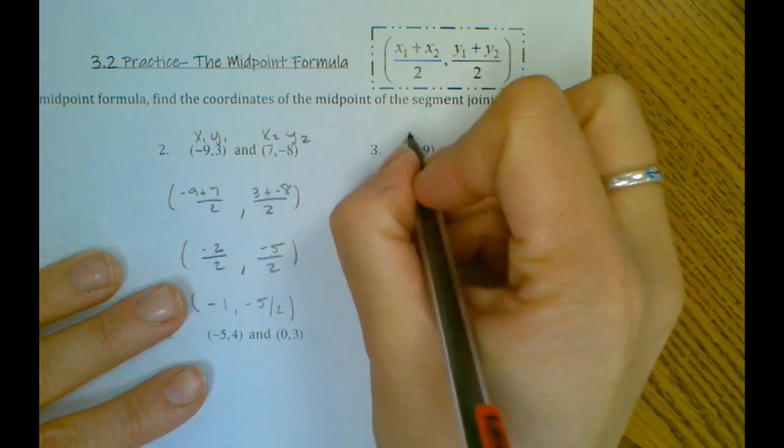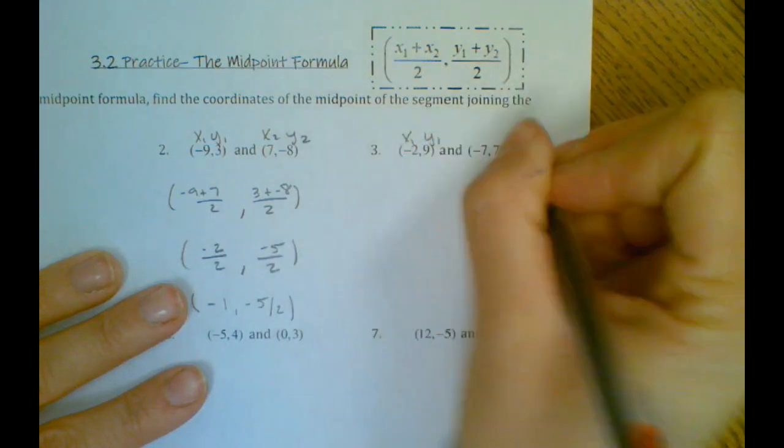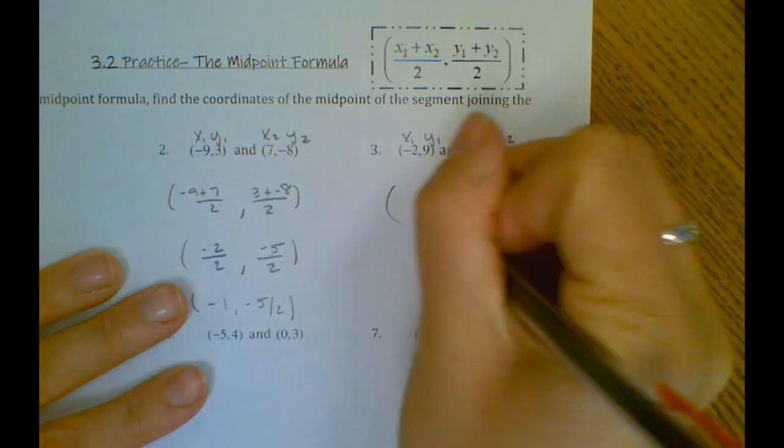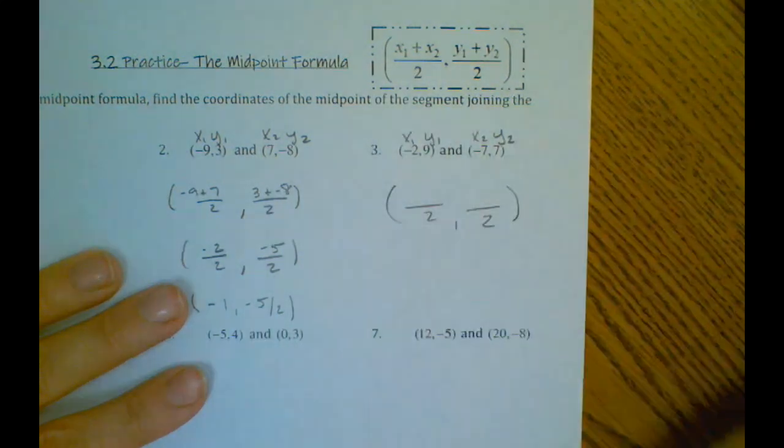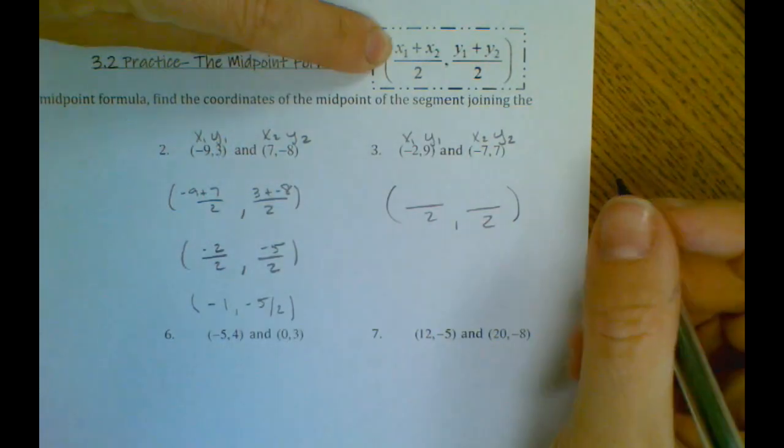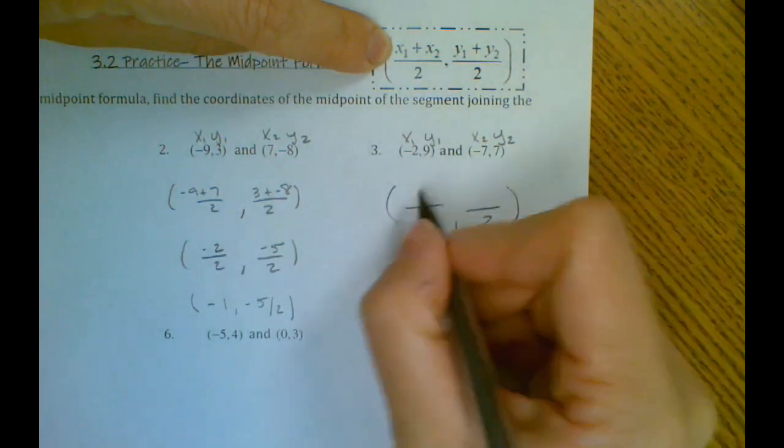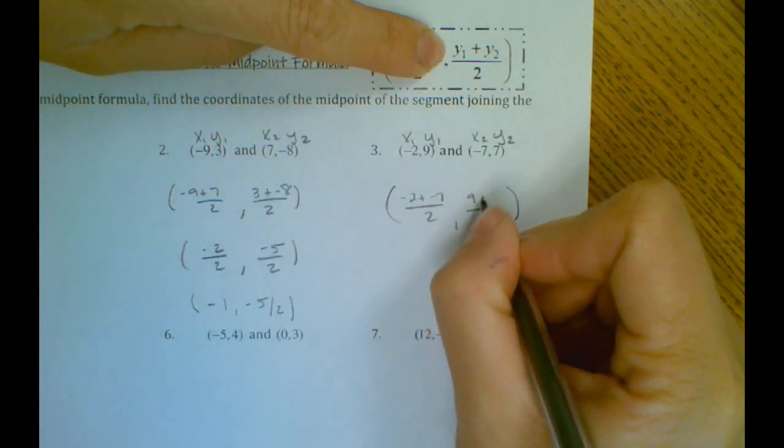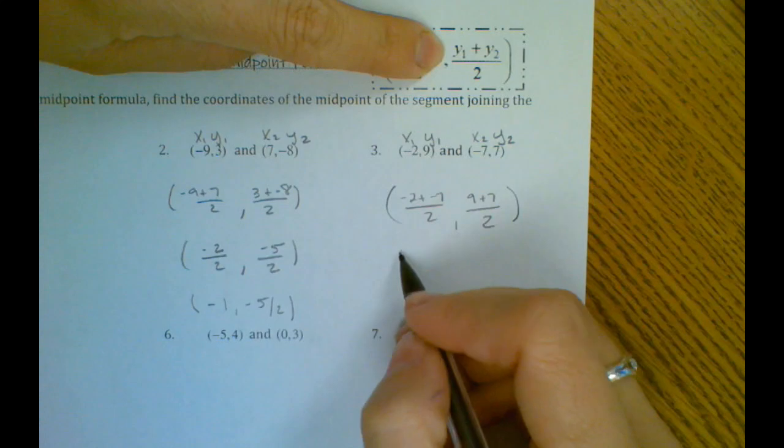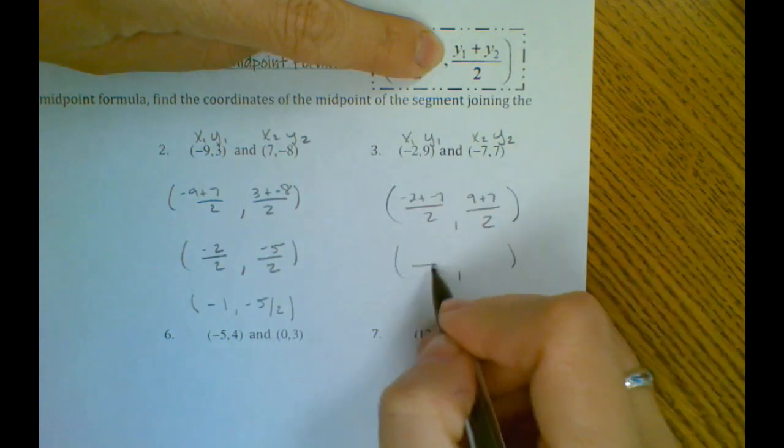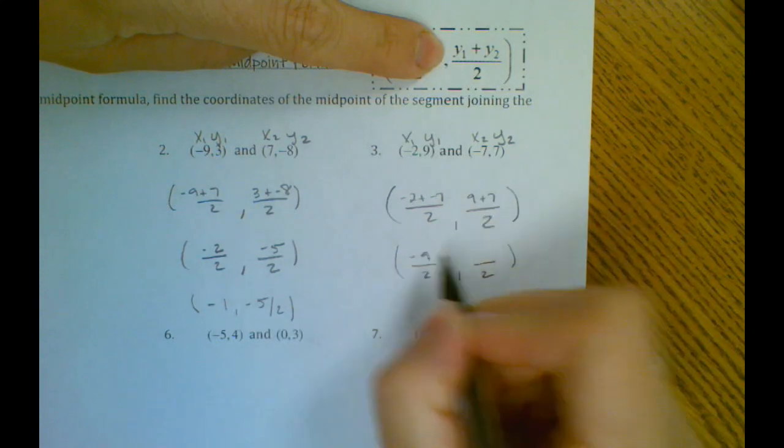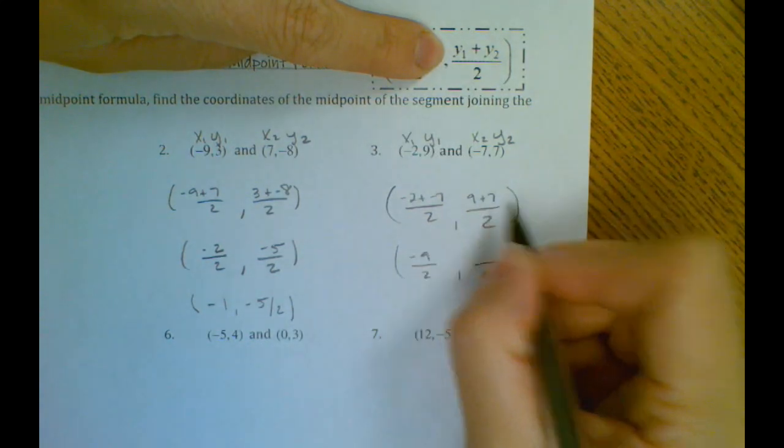Okay, number 3. So on top we have our x1 plus x2, so negative 2 plus negative 7. And then our y1 plus y2. So negative 2 minus 7 is negative 9, and 9 plus 7 is 16.